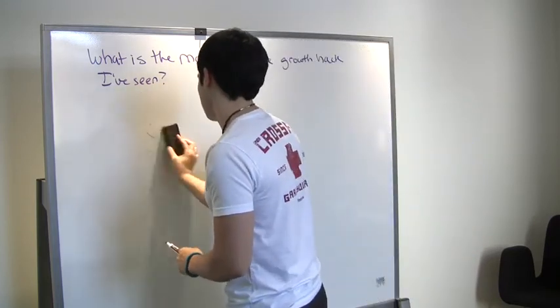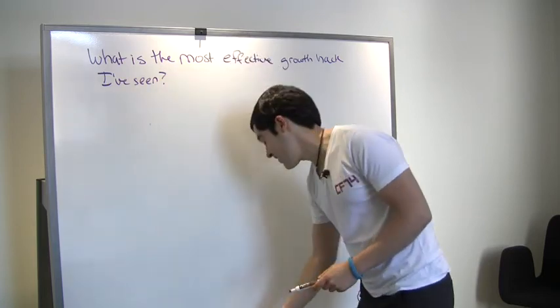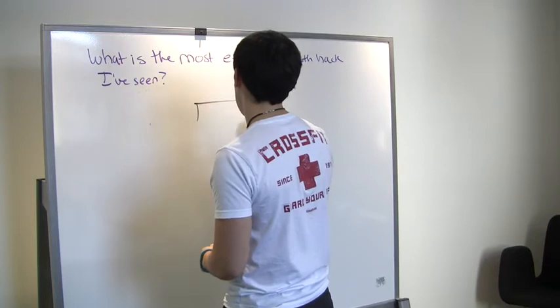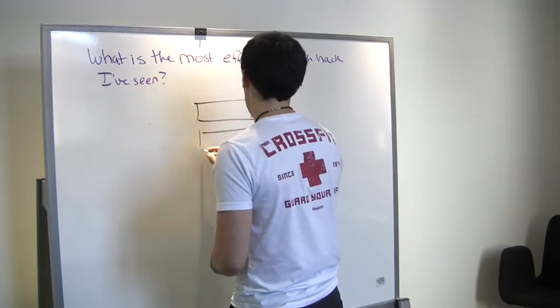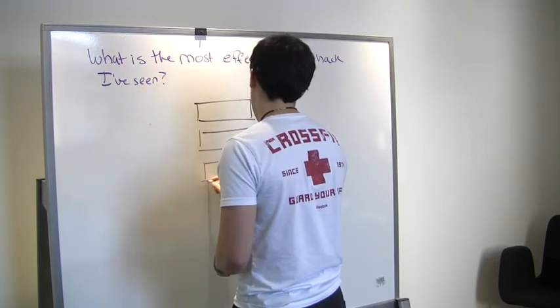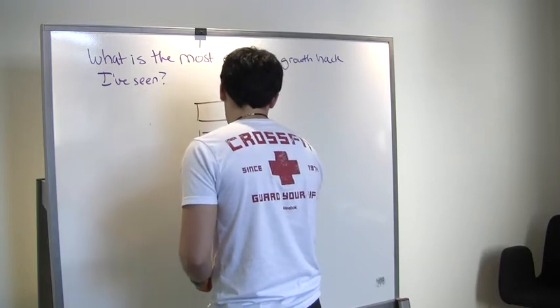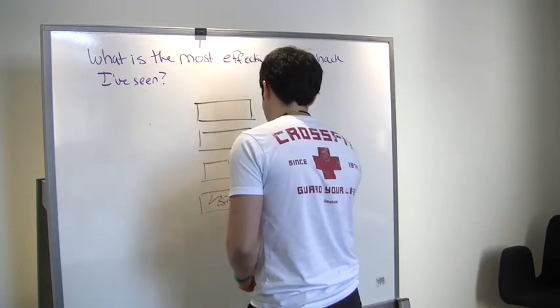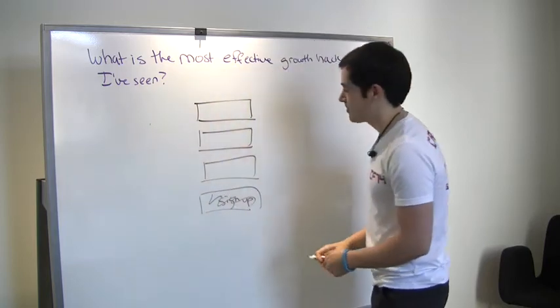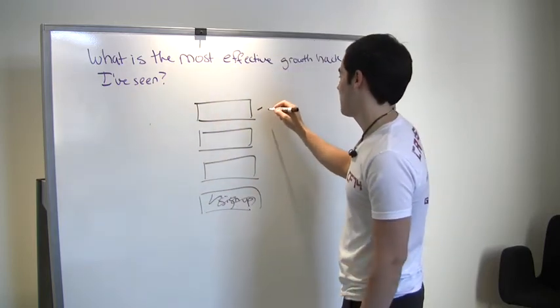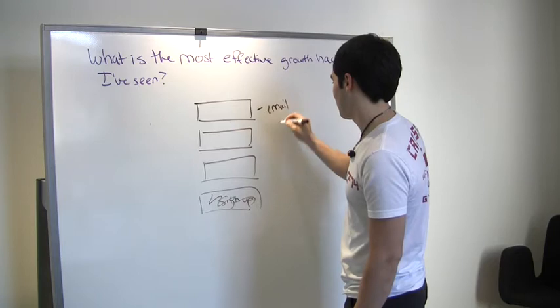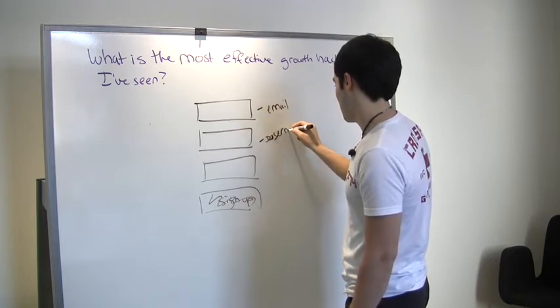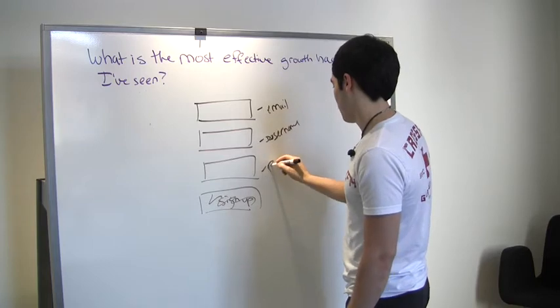And so the most effective growth hack I've seen is the fact that whenever a user is signing up, you're accepting PII about the user, whatever it is. And so let's say that, for example, this is a sign-up form. And so typically, it's something like maybe email, username, and some form of password.